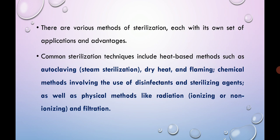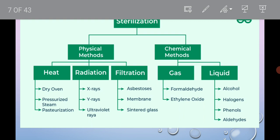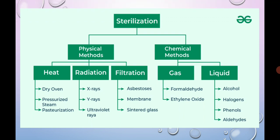Here you can see the different types of sterilization techniques, which include heat-based methods such as autoclaving and dry heat sterilization, flaming, chemical methods that use disinfectants and sterilizing agents, and also physical methods like radiation or filtration, which can be employed for effective sterilization. Sterilization is a method majorly divided into two categories: the first is physical method and the second is chemical method.